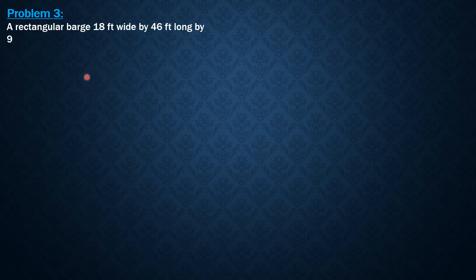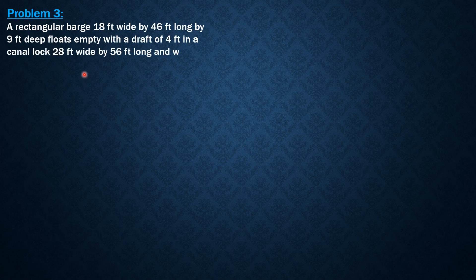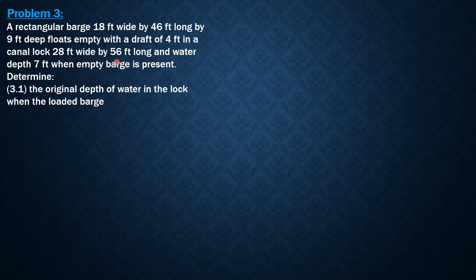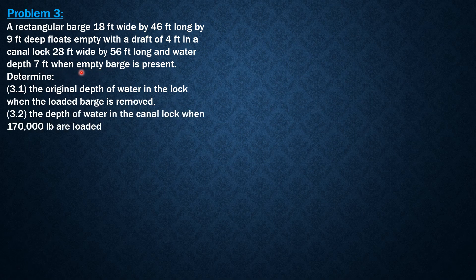Hello everyone. I'm going to discuss the solution to Example 3 on buoyancy. The problem: a rectangular barge 18 feet wide by 46 feet long by 9 feet deep floats empty with a draft of 4 feet in a canal lock 28 feet wide by 56 feet long with a water depth of 7 feet when the empty barge is present. Determine: first, the original depth of water in the lock when the loaded barge is removed, and second, the depth of water in the canal lock when 170,000 pounds are loaded onto the barge.